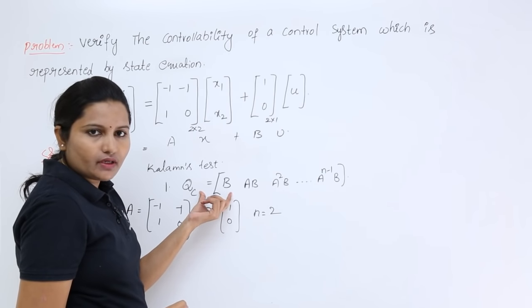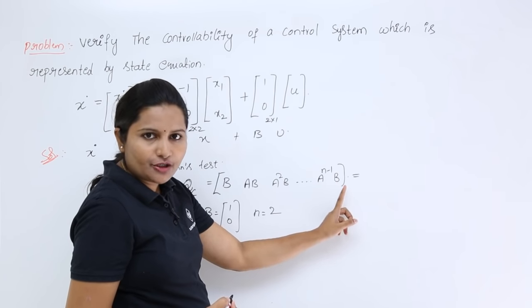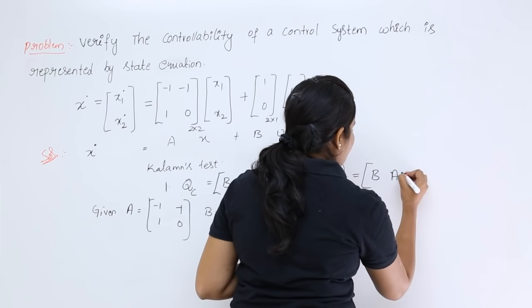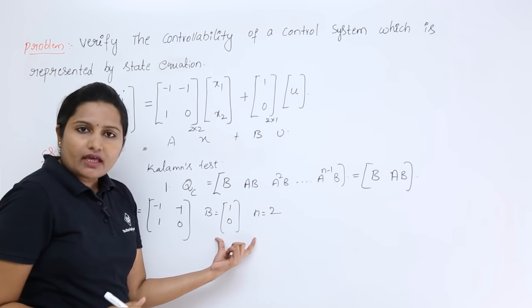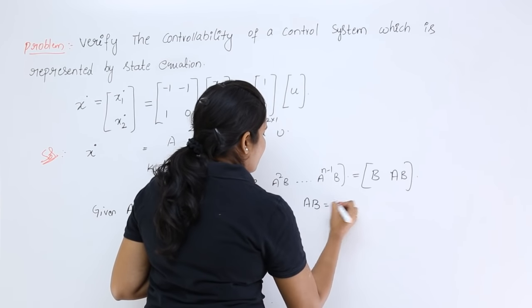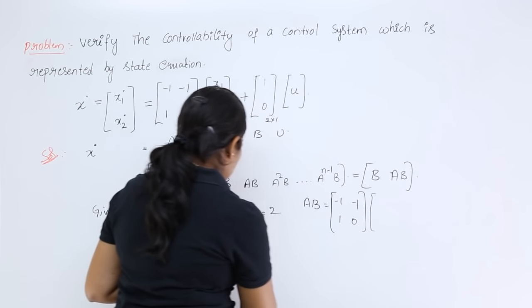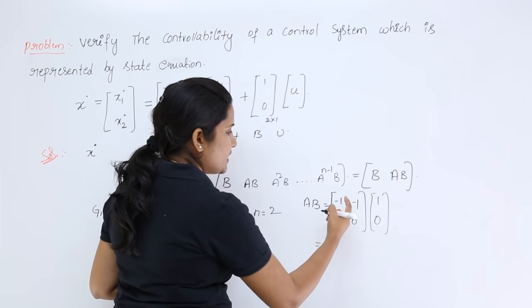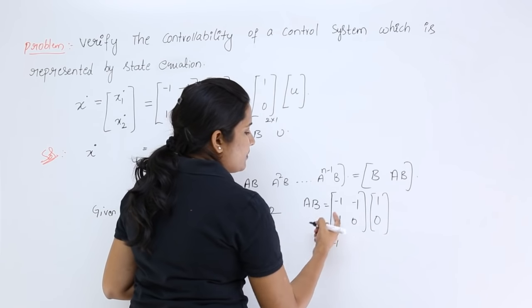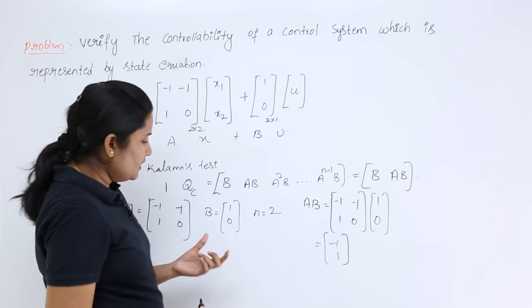Since N = 2, the QC matrix is limited to two terms: [B, AB]. We already have B, so we just need to calculate AB. Multiplying A and B: the first entry is (-1)(1) + (-1)(0) = -1, and the second entry is (1)(1) + (0)(0) = 1. So AB = [-1; 1].